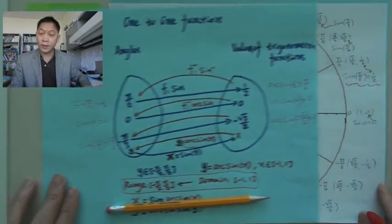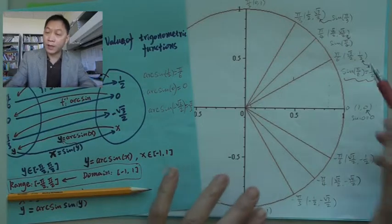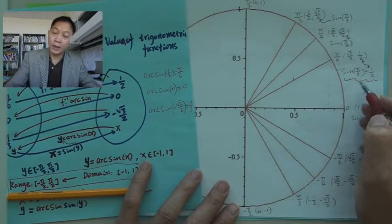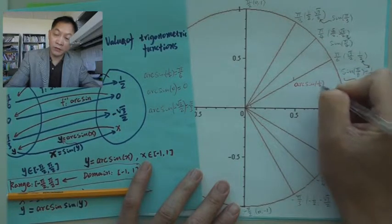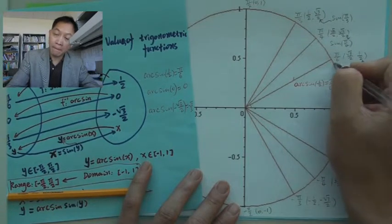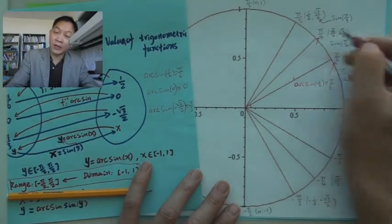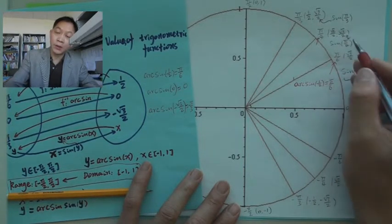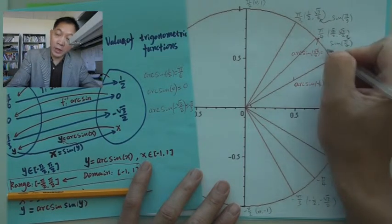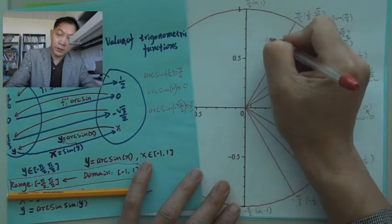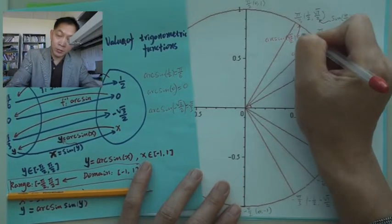Let's review arc sine values. Since sine(π/6) = 1/2, we can write arc sine(1/2) = π/6. Similarly, since sine(π/4) = √2/2, we can write arc sine(√2/2) = π/4. And arc sine(√3/2) = π/3.